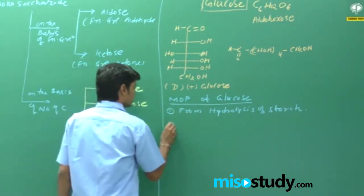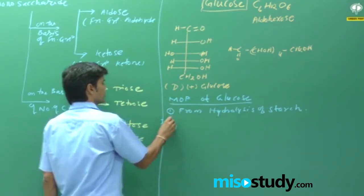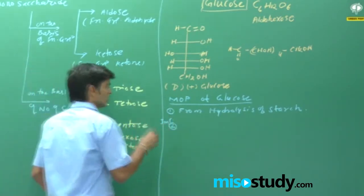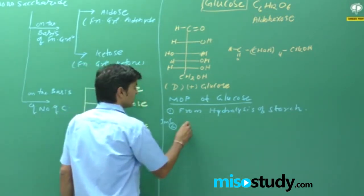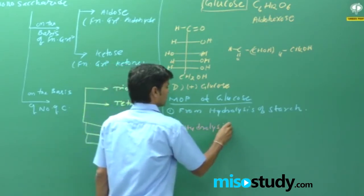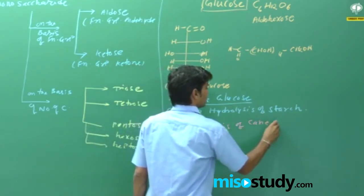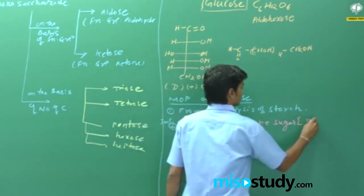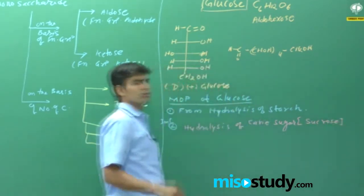Another example which is very important — important for question purposes — is hydrolysis of cane sugar. The other method for preparing glucose is hydrolysis of cane sugar.